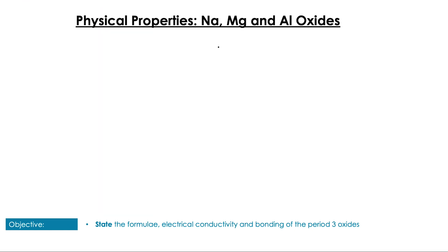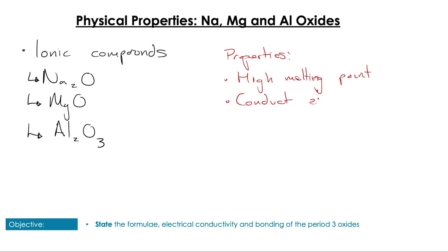The physical properties of Group 1, 2, and 3 metals are pretty much explained by the fact that they are all ionic compounds: Na2O, MgO, and Al2O3. These have high melting points, high boiling points, they conduct electricity when molten, and that's all to do with the fact that they exhibit ionic bonding.